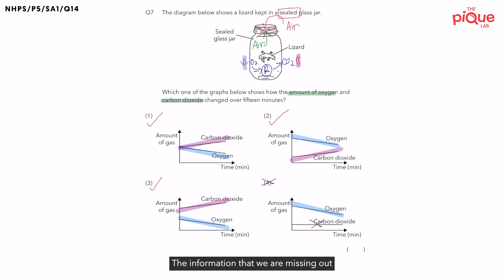The information that we are missing out is the starting volume of the gases. So please remember, whenever we are comparing gases, not only do we have to look at the increasing or decreasing trend of the gases, we must also look at the starting volume of the gases. Let's draw a mini table on the top left corner to compare the amount of gases in the air that we breathe in and in the air that we give out. What is the percentage of oxygen in the air that we breathe in? 21%. And what is the percentage of carbon dioxide in the air that we breathe in? 0.03%.